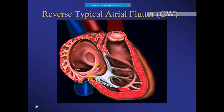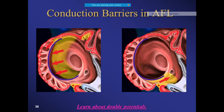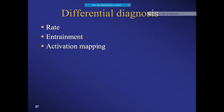The reverse typical atrial flutter is clockwise and involves the same structures but in the opposite direction. The left atrium activates incidentally in a low septal to left upper pulmonary vein direction. Regarding the mechanism of double potentials: most researchers support the idea of a line of block - either functional or fixed - along the SVC-IVC line, cavo-tricuspid isthmus, or sinus venosus region. Without a line of block, the re-entry would be short-circuited.